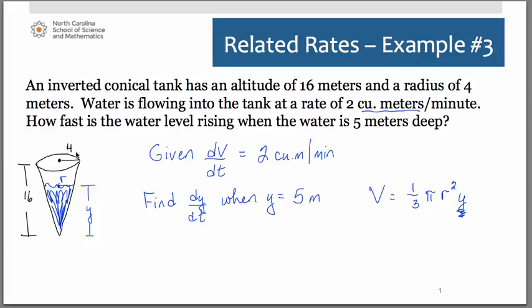We could do 4 which is the radius of the entire cone over 16 the height of the entire cone and we could set that equivalent to r over y. Now remember with proportions there's lots of different equivalent ways to set them up. So I'm just going to do it this way 4 over 16 equals r over y.